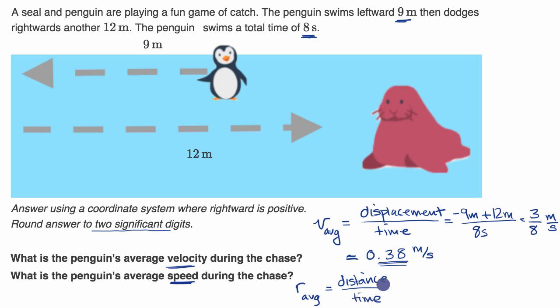And with distance, we don't care about the direction, we just care about the magnitude. So we go nine meters to the left, plus 12 meters to the right. One way to think about it is the absolute value of each of these values. And then we're going to divide that by our elapsed time.